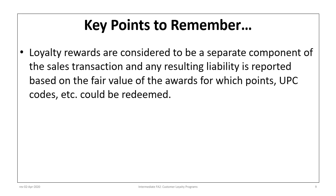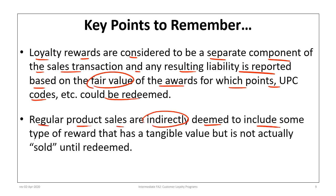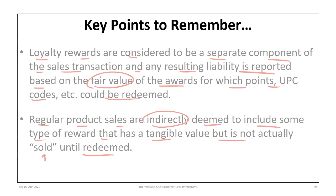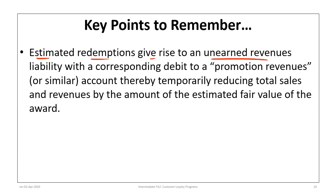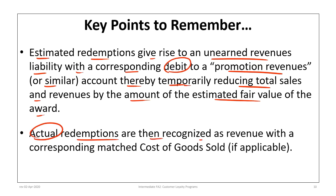Some key points to remember: Loyalty rewards are considered a separate component of the sales transaction, and any resulting liability is reported based on the fair value of the awards for which points, UPC codes, or similar items could be redeemed. Regular product sales are indirectly deemed to include a reward with tangible value that is not recognized as sold until redeemed in the future. Estimated redemptions give rise to an unearned revenue liability and a debit to the promotion revenue account, temporarily reducing total sales by the estimated fair value. Actual redemptions are then recognized as revenue with a corresponding matched cost of goods sold.